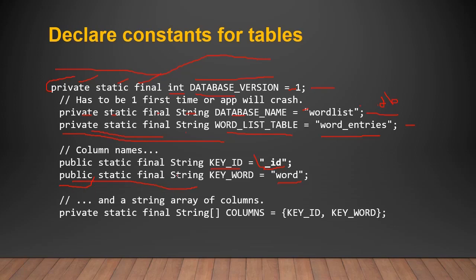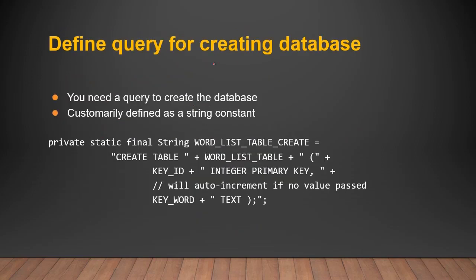If you use private, you can only access this static variable inside the class — you cannot use it outside the scope of the class. If you want to use the column name outside the scope of the class, make sure you use the public access modifier. After that, create a string array of columns and pass its column as a column array.